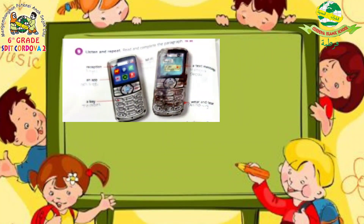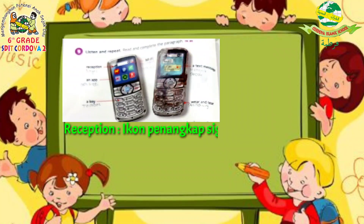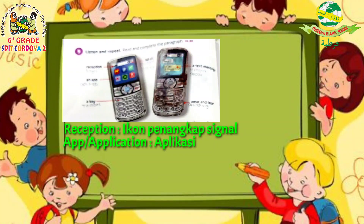The first one, we're gonna learn about the parts of a cell phone. As the picture you can see, we can see old-style phones. So the parts include: the first one is reception — reception is the icon to capture signal, so we can see the signal we get on our phone. Next, an app — an app is an application. Next, a key — key is the on/off button of the phone.